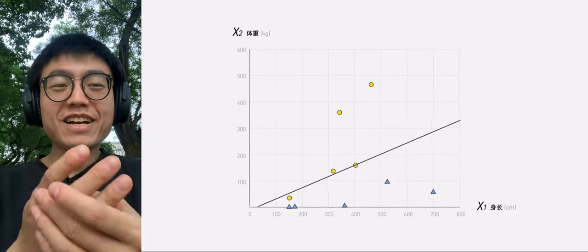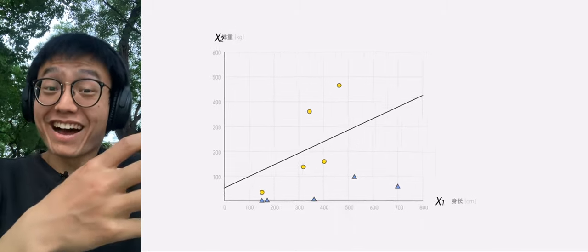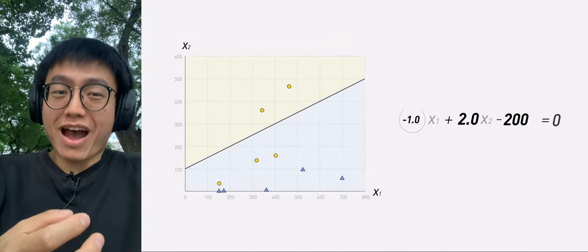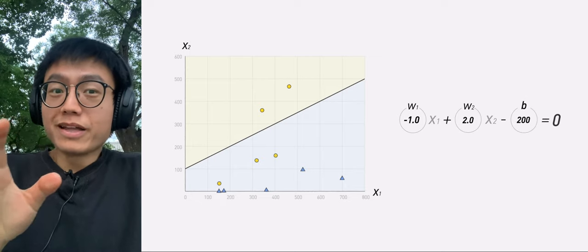It's easy, right? We can also define this line with an equation. These three parameters are W1, W2, and B.